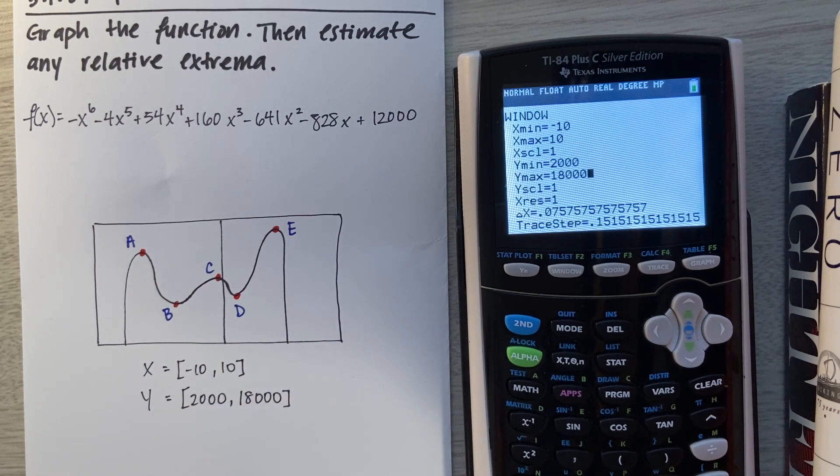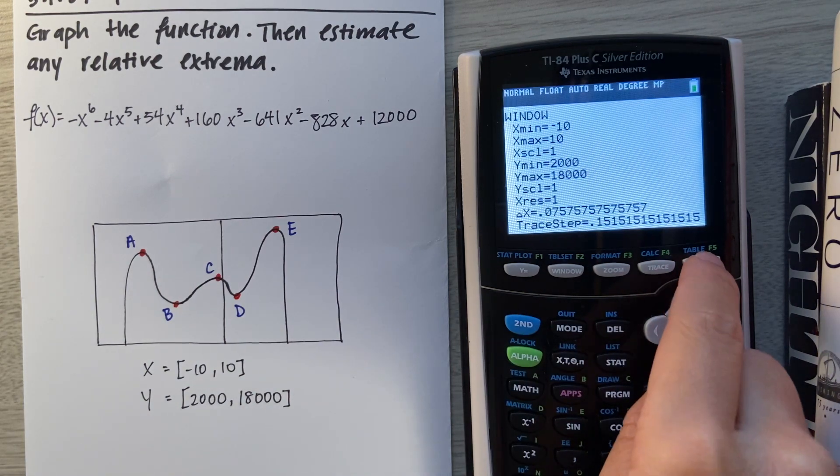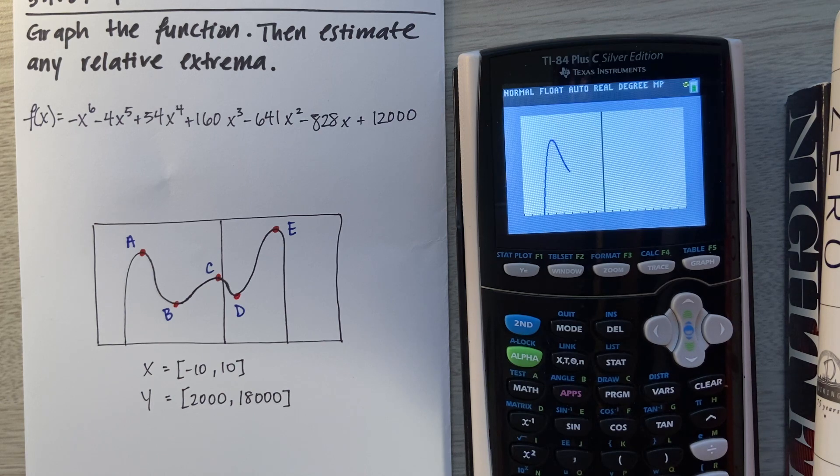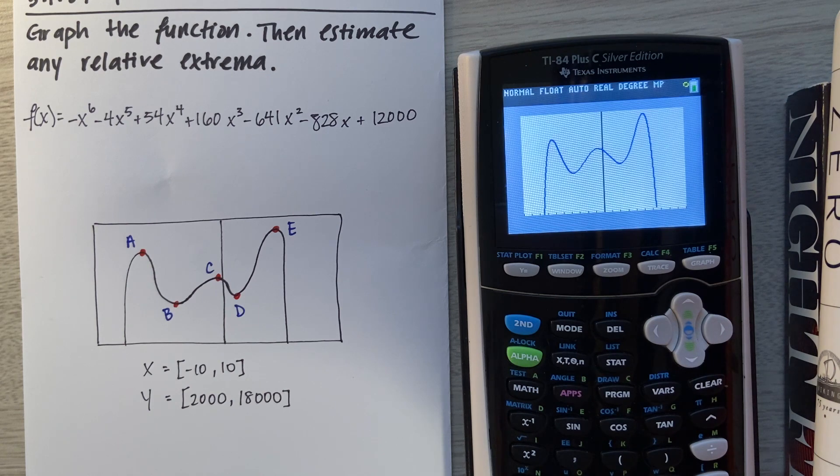Now we're going to try graphing again and see what we come up with. On the very right-hand corner again, hit Graph. We see the little loading sign. Now it looks like we're seeing something, right? It's done graphing.